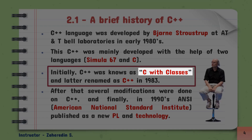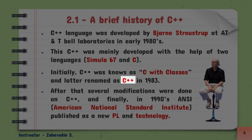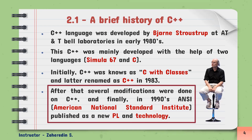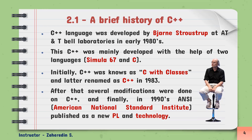However, Simula itself was too slow for practical uses. As a result, his goal was to add this object-oriented programming concept into the C programming language, and initially he named the newly developed language as 'C with Classes.' Later on, he renamed it as C++ in 1983. After 1983, several modifications were done on C++, and it was finally published as a new programming language in the 1990s by the American National Standards Institute. Nowadays, C++ has become the most widely used programming language for sophisticated tasks.